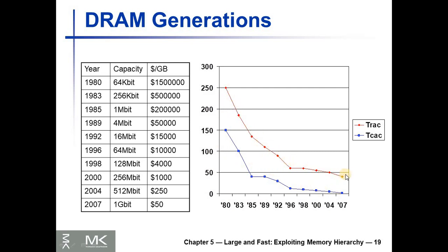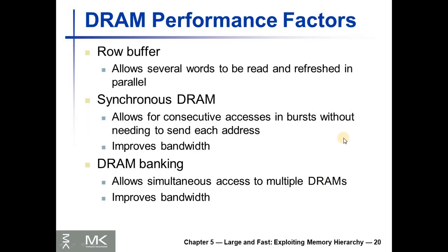To summarize: modern DRAMs use a row buffer that allows several words to be read and refreshed in parallel. Synchronous DRAM allows four consecutive accesses in burst without needing to send each address — the counter keeps generating the next column address, which improves performance. Also, modern DRAM organizations have multiple banks that allow simultaneous access of multiple DRAMs, which also improves bandwidth.